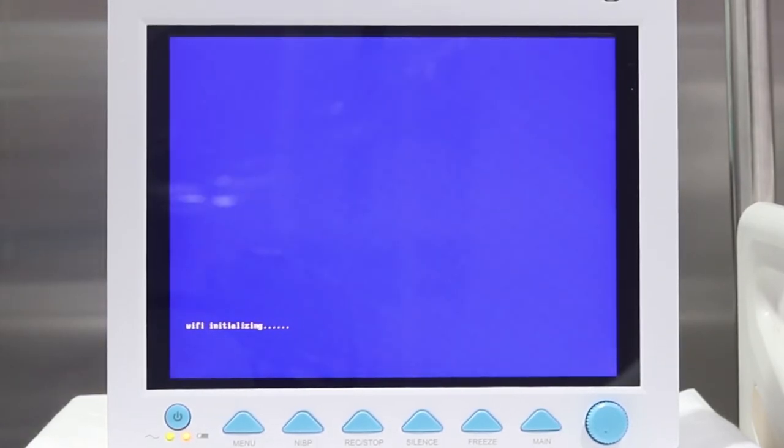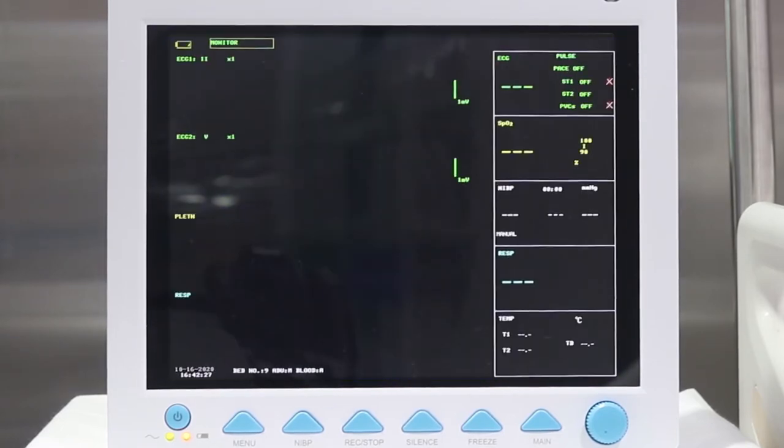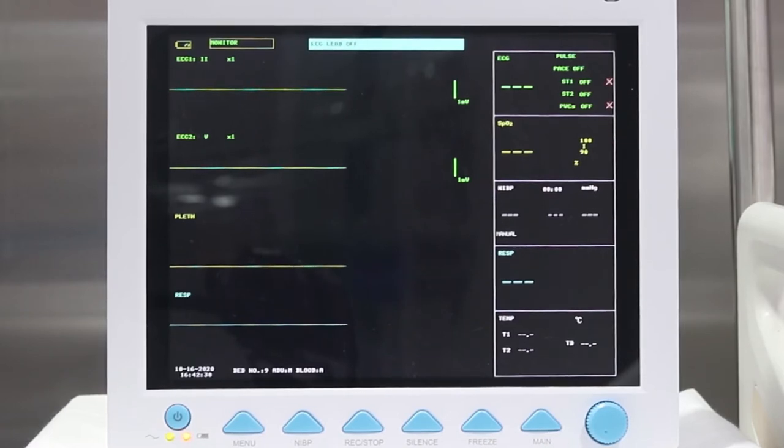Screen Display: The display screen can be divided into three parts. Information area at the top and bottom of the screen, waveform or menu area displays eight waveforms and menu options, and parameter area to the right side of the waveforms.